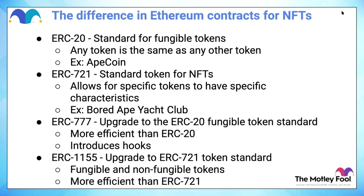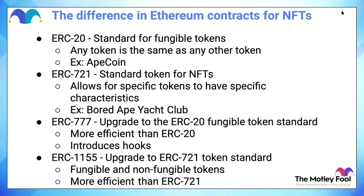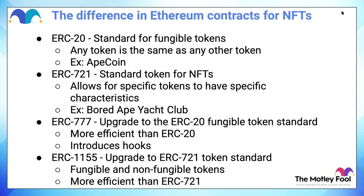ERC-721 is the standard for non-fungible tokens. It allows for specific characteristics — it's basically more flexible. In this case, your quarter and my quarter are not the same; maybe yours has one president on it and mine has another, just like two Bored Ape Yacht Club tokens are not exactly the same. NFT pictures are really just a token — it's just that they're a different type of token from tokens like Ape Coin or any of the other coins on the ERC-20 contract. That's really the big difference between those two, and those are still the two primary contracts you'll see today.